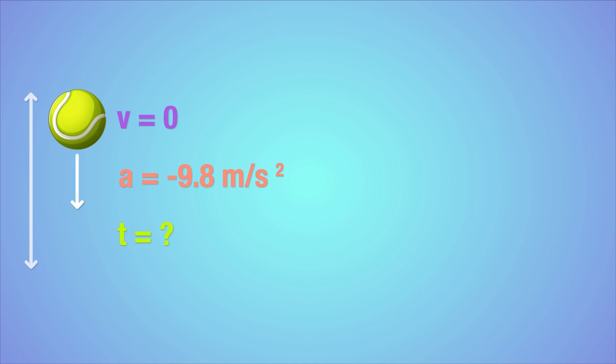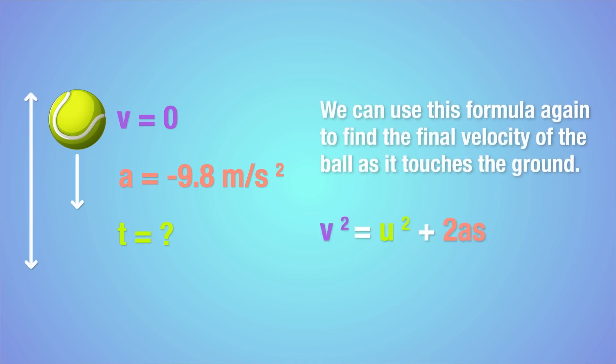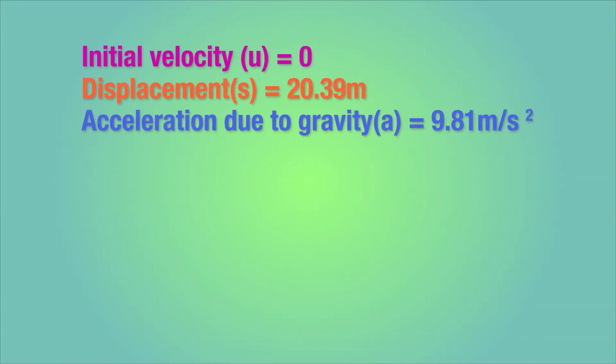Let's reconfirm that by using the equations of motion to calculate the same figure. We're going to use this formula again to find the final velocity of the ball as it touches the ground. We know the ball will start its descent with an initial velocity of zero, because at its highest point, it momentarily stops before it turns around to head back down.